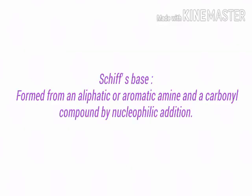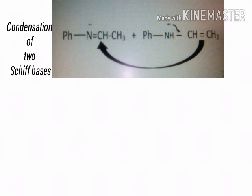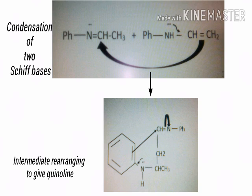A Schiff base is formed from an amine and a carbonyl compound. This is the mechanism for Doebner-Miller synthesis. Condensation of two Schiff bases takes place and an intermediate is formed, which gives quinoline.